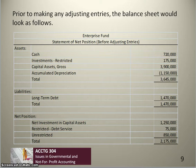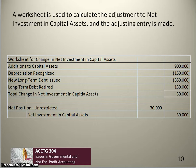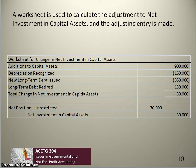To adjust net investment in capital assets, we create a worksheet accounting for all events during the year: we added capital assets of $900,000 (increases balance); recognized $150,000 depreciation (decreases balance); issued $850,000 in new debt (decreases balance); and paid $130,000 in principal (increases balance). The net change is an increase of $30,000. The adjusting entry increases net investment in capital assets by $30,000, with the offsetting entry decreasing net position unrestricted. Total net position remains unchanged.